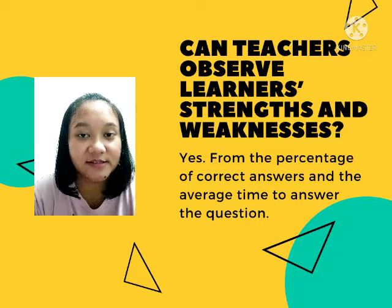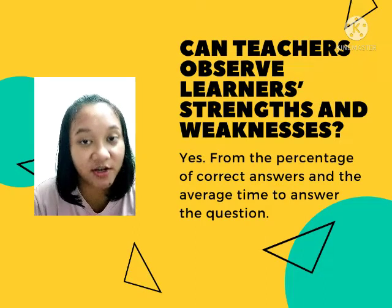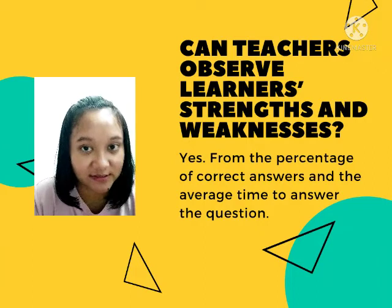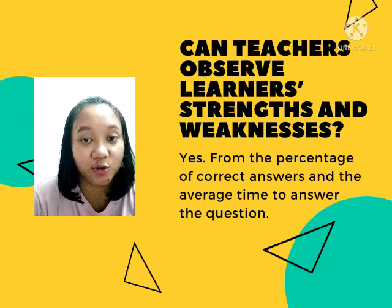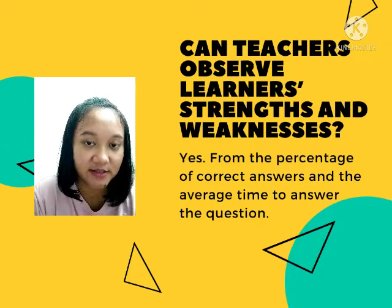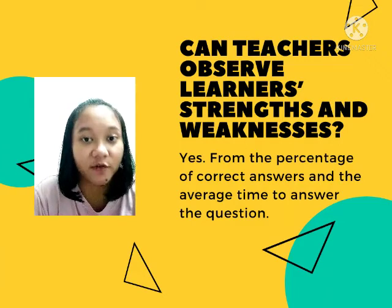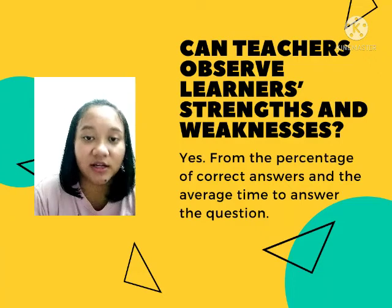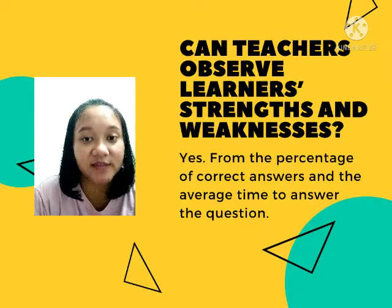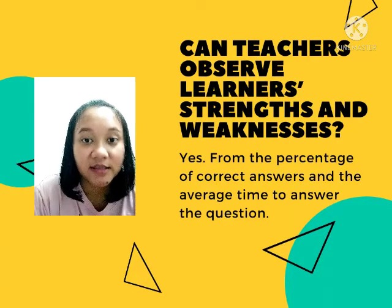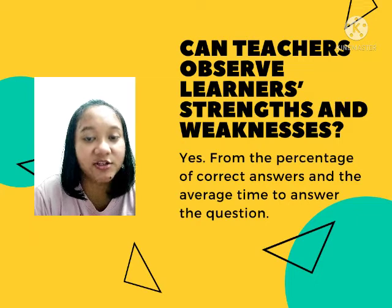The next question is: can teachers observe learners' strengths and weaknesses? The answer is yes. The teacher can see the weaknesses and strengths of students by looking at the percentage of correct answers from the total number of students. The teacher can determine how big the percentage for passing a question is. Apart from the percentage, the teacher can also see from the average time it takes students to answer a question. Thus, teachers can make this an evaluation of learning.